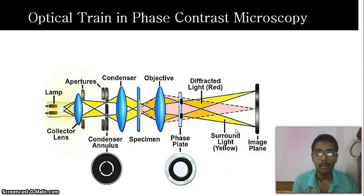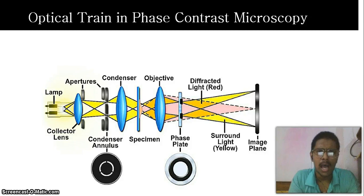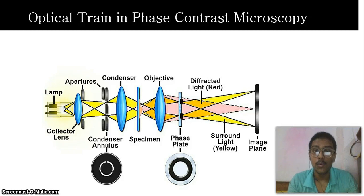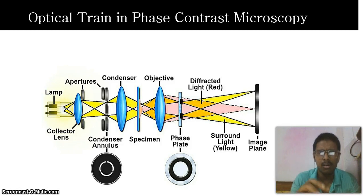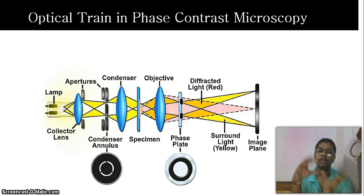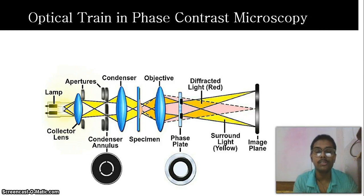The undiffracted light doesn't contain any information from the specimen. That's why scientists thought: 'I can't use undiffracted light as an information carrier for the specimen, but I can use it to increase the contrast, to make the image quality better.' So they used the undiffracted light — which doesn't carry any information — to increase the image contrast. This is done using a special phase plate, which works quite similar to the condenser annulus, to make a phase difference with the diffracted light. This is recorded in the image plane to make better contrast, helping you investigate every minute detail of your specimen.